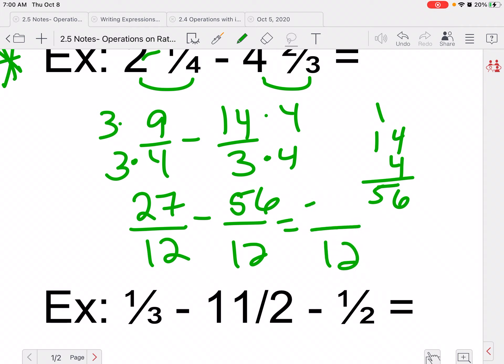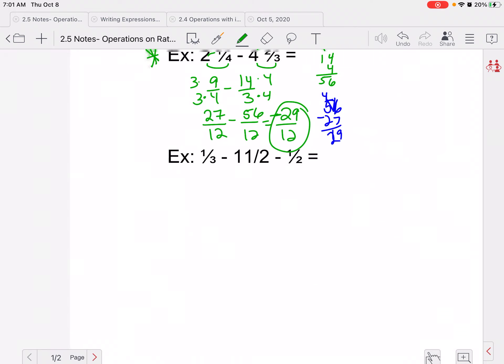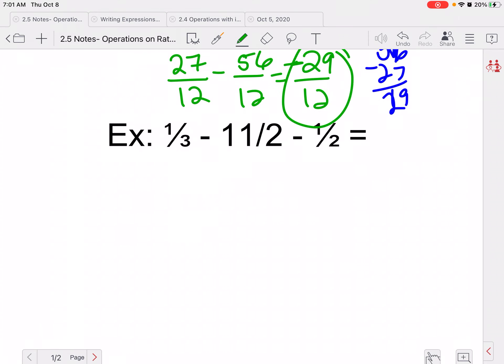So then off to the side here, I can do... I'll do it in a different color. 56 minus 27. So I'm going to borrow. 16 minus 7 is 9. So I get 29. So -29/12. And that cannot be simplified. So we will leave it as is. I think this is our last one. I'm just going to move this guy up a little bit.